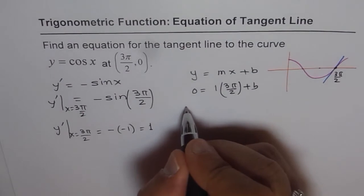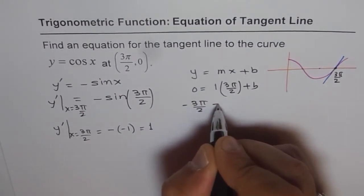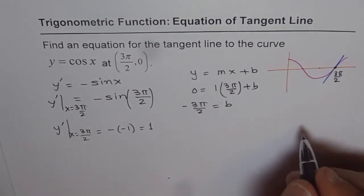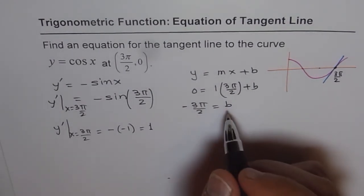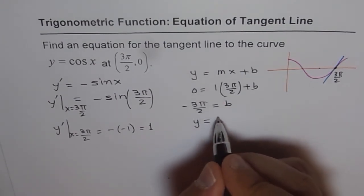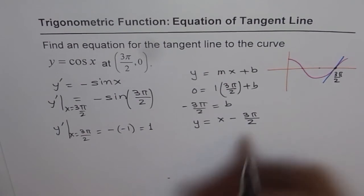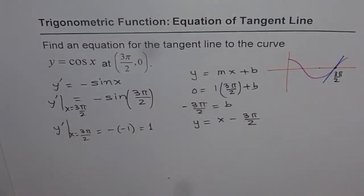So b is equal to minus 3π/2. That's the value of b. And therefore, the equation of the line for us will be y equals x minus 3π/2. So that is going to be the equation of this particular line.